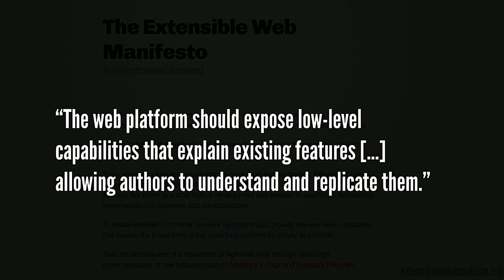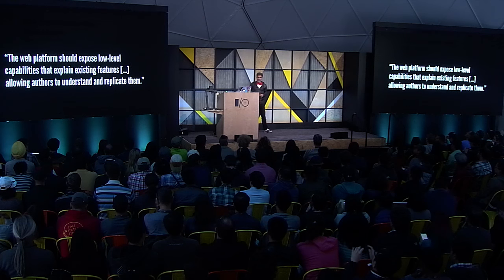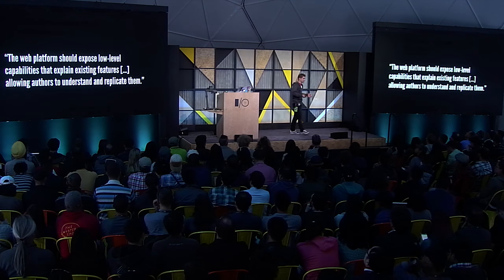Both Shadow DOM and custom elements are specs that expose something to you that the browser already had internally, and now it is at your disposal. It enables you to recreate behavior that was already there before but you wouldn't have been able to do. This kind of mind-blowingness has a name — it's the Extensible Web Manifesto. The key quote for me from that manifesto is: the web platform should expose low-level capabilities that explain existing features and allow authors to understand and replicate them. And this goes further — it not only allows you to understand and replicate things, but you can combine all these low-level capabilities into something potentially new and mind-blowing. Looking at the current state of the web, you find a lot of things that could be exposed. One of these glaring shortcomings is CSS. And that's why Houdini exists.